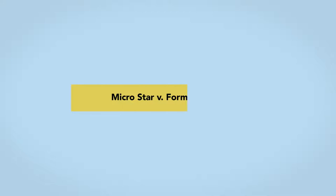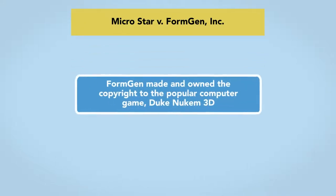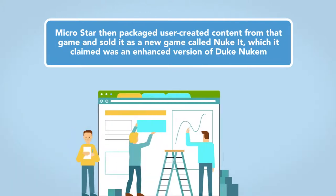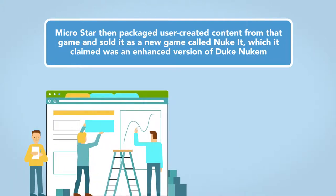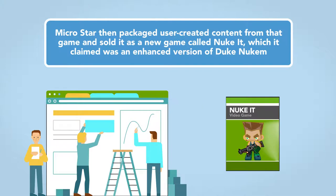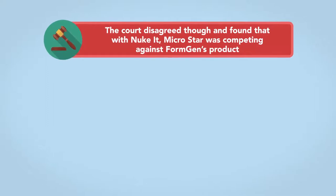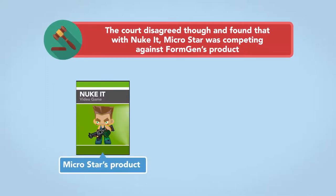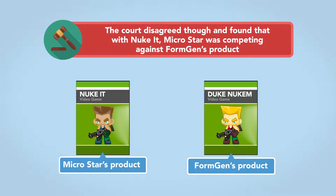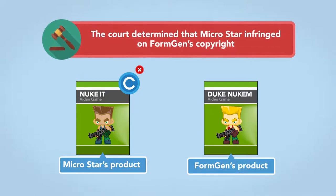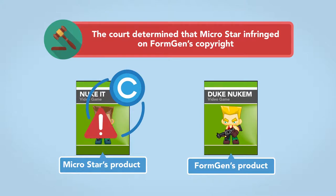In one case, MicroStar v. FormGen Inc., FormGen made and owned the copyright to the popular computer game Duke Nukem 3D. MicroStar then packaged user-created content from that game and sold it as a new game called Nuket, which it claimed was an enhanced version of Duke Nukem. The court disagreed, though, and found that with Nuket, MicroStar was competing against FormGen's product. The two computer games were too alike, and the later game couldn't qualify for derivative work status. The court determined that MicroStar infringed on FormGen's copyright.